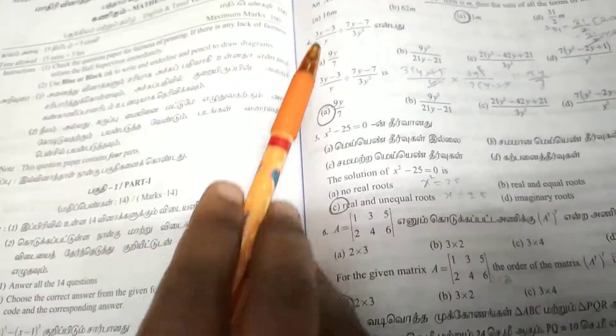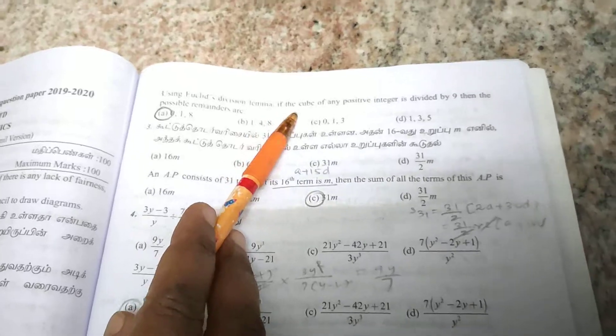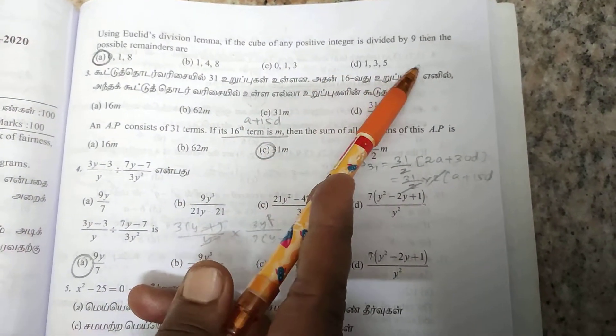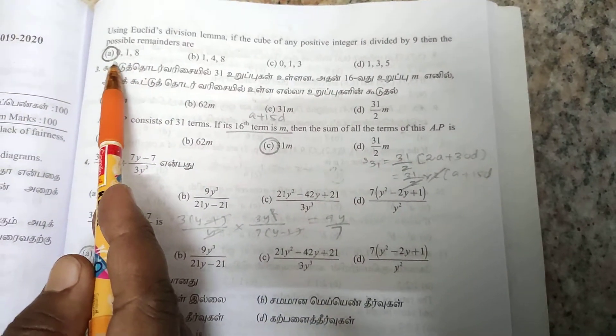Second one: using Euclid's division lemma, if the cube of a positive integer is divided by 9, the remainders are 0, 1, and 8.